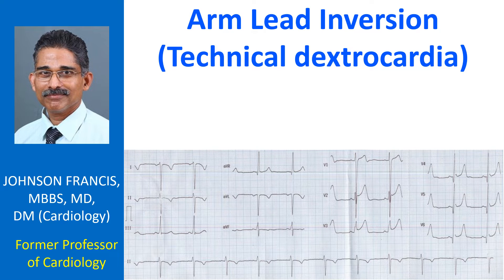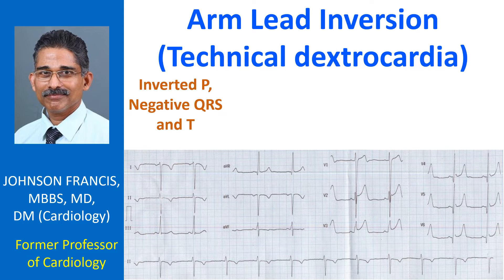Arm lead inversion, i.e. right arm lead placed on left arm and vice versa, can be recognized by inverted P waves, negative QRS and T waves in lead 1. The same pattern can be seen in true dextrocardia as well.